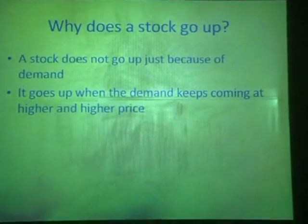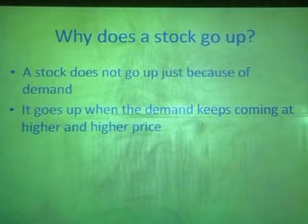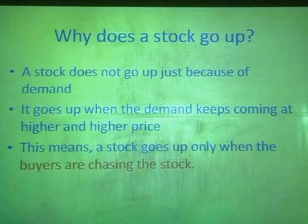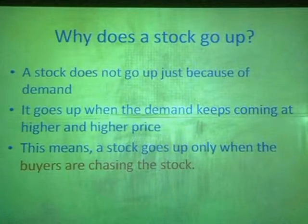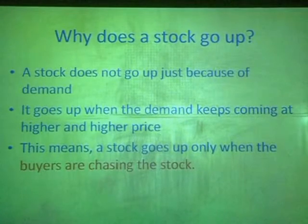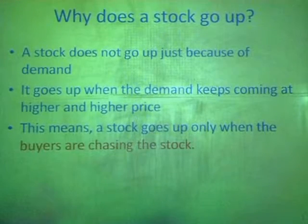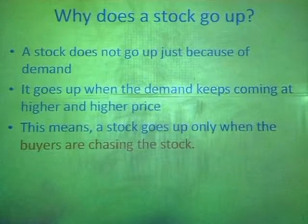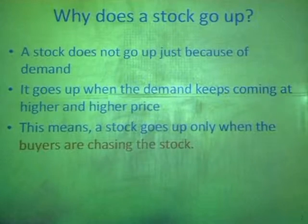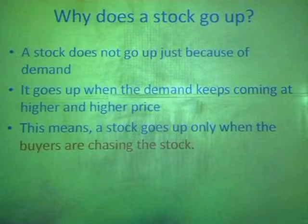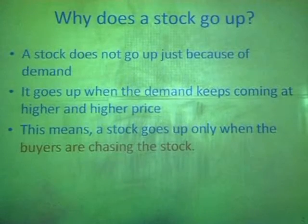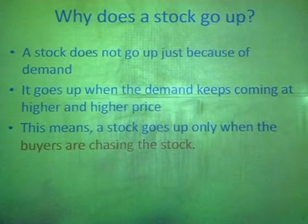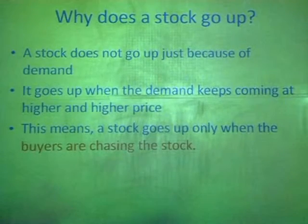When does it go up? It goes up mainly when demand keeps coming at higher and higher prices. In other words, a stock goes up only when buyers are chasing the stock. This chase is important. If the chase is not there, the stock price simply cannot go up. At the most, it will not fall. There is demand for Reliance at 900 — Reliance won't go below 900, but that doesn't mean it will go up. Every time it is 900, the supply is absorbed. That forms a floor. But that doesn't take the stock up. So for stock to go up, buyers must chase the stock.